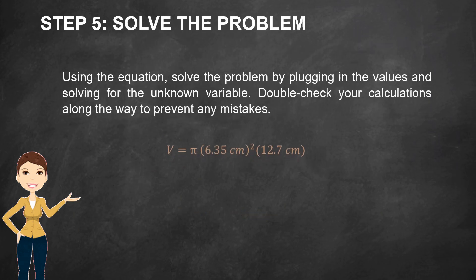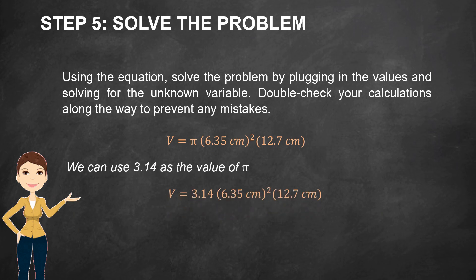Step 5: Solve the problem. Using the equation, solve the problem by plugging in the values and solving for the unknown variable. Double check your calculations along the way to prevent any mistakes. Step 6: Volume is equal to pi times the square of 6.35 centimeters times 12.7 centimeters. We can use 3.14 as the value of pi. Volume is equal to 3.14 times the square of 6.35 centimeters times 12.7 centimeters.